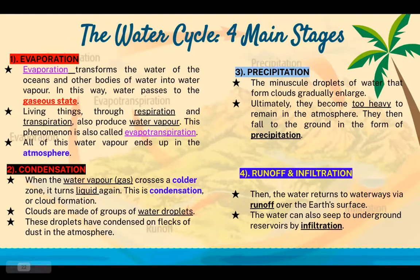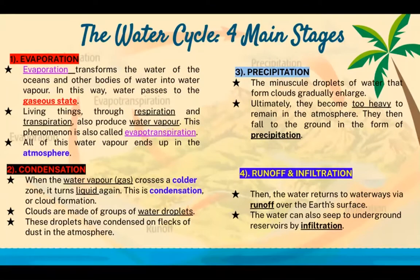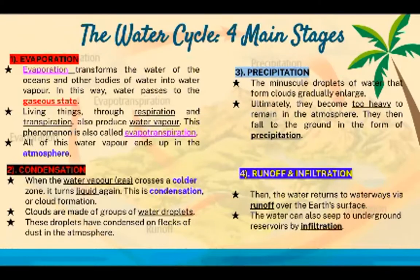Clouds are made of groups of water droplets that have condensed on fluxes of dust in the atmosphere. Three: precipitation. The minuscule droplets of water that form clouds gradually enlarge. Ultimately they become too heavy to remain in the atmosphere and then fall to the ground in the form of precipitation.